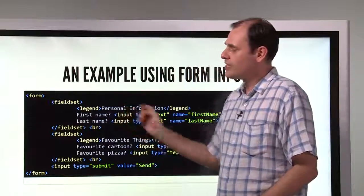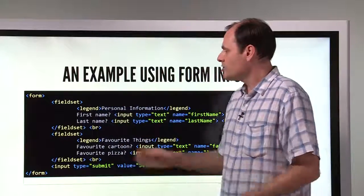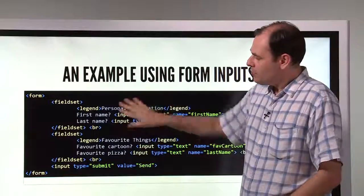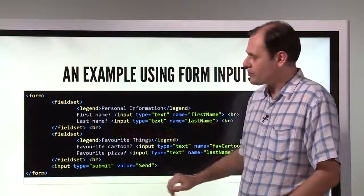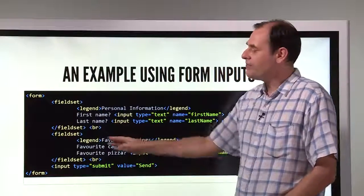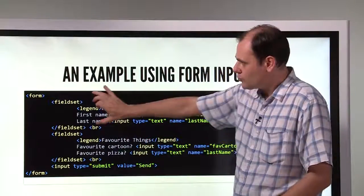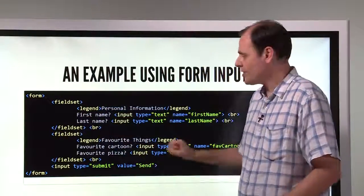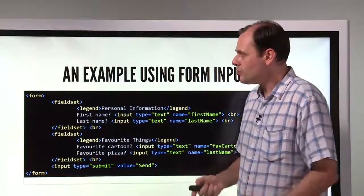Advantages to using fieldset and legend. So here I've got my fieldset, I've got my legend, personal information, two inputs. What about here? Another grouping, fieldset, legend, favorite things. So I've got two groups which work together. What does it look like?